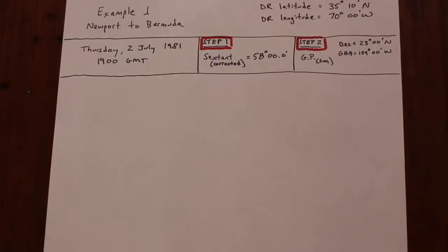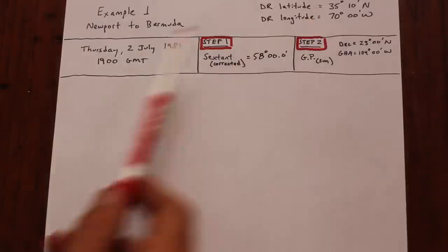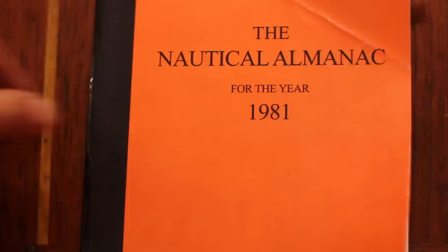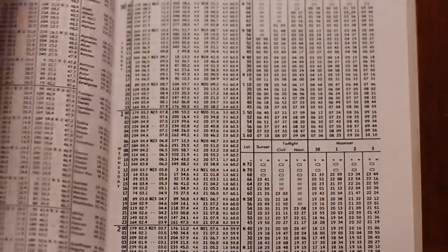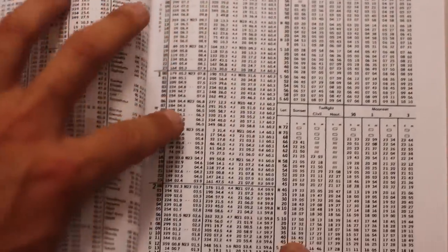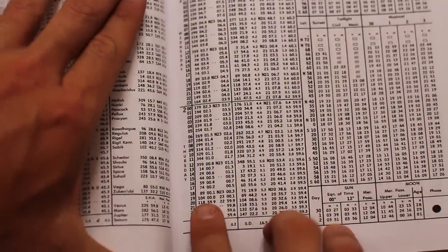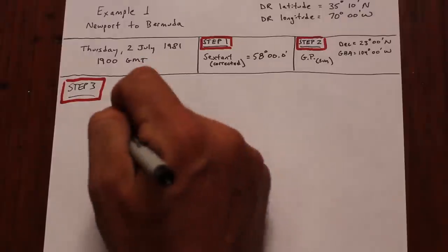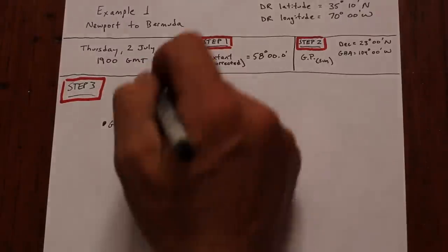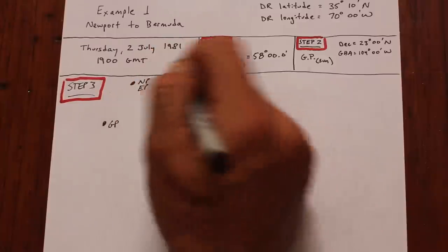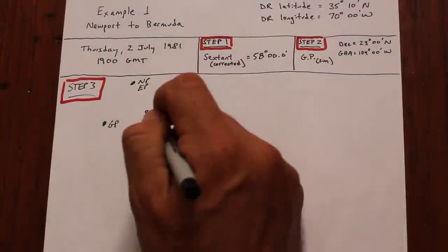In this example, we're heading from Newport to Bermuda, and our DR position is as indicated. Since we're pretty familiar with steps one and two, we won't waste time on that here, but as a reminder, we use the nautical almanac to determine the GP of the sun. After all standard corrections, we measure the height of the sun to be 58 degrees above the horizon. According to step three of the process, we need to build a triangle.